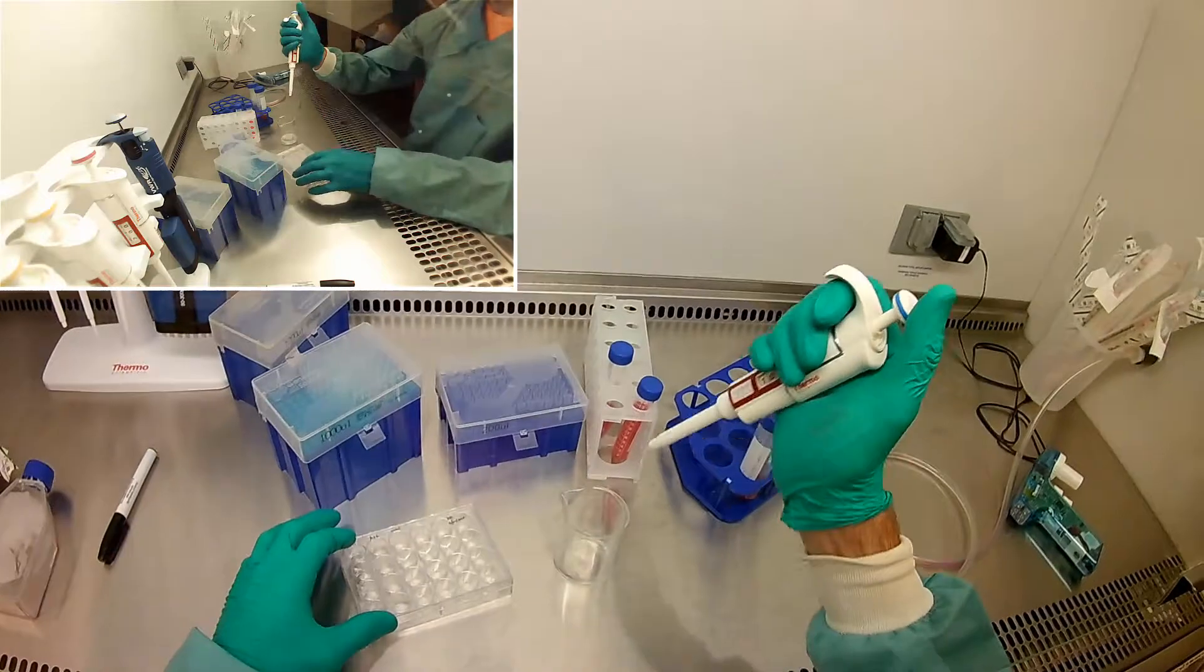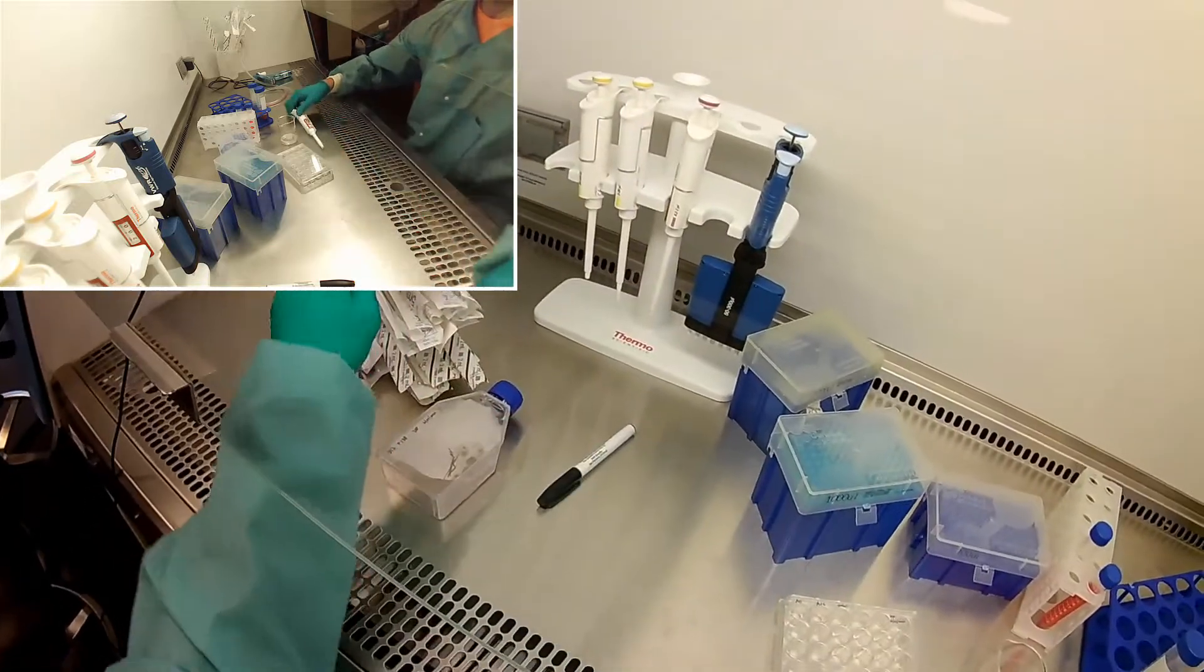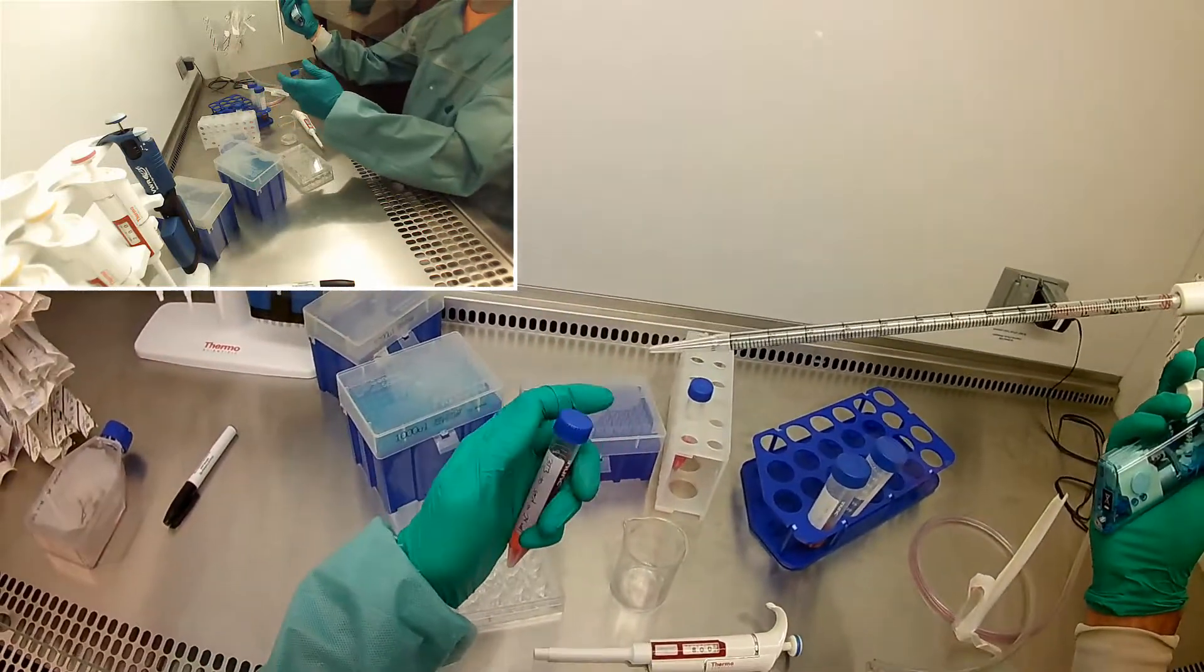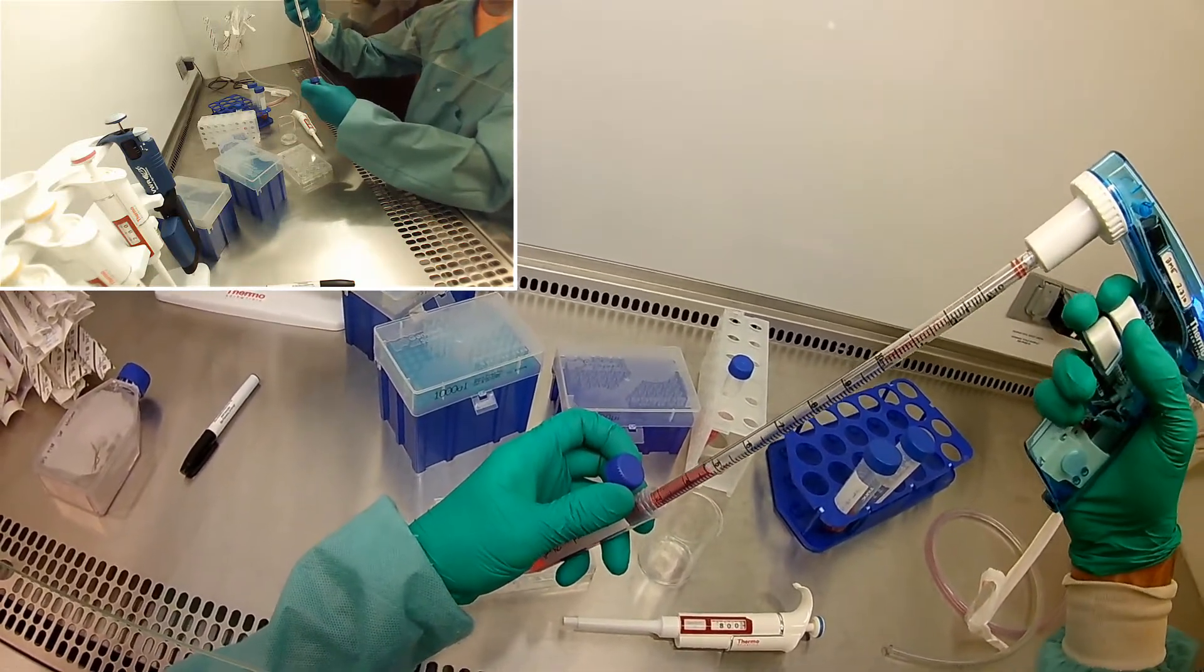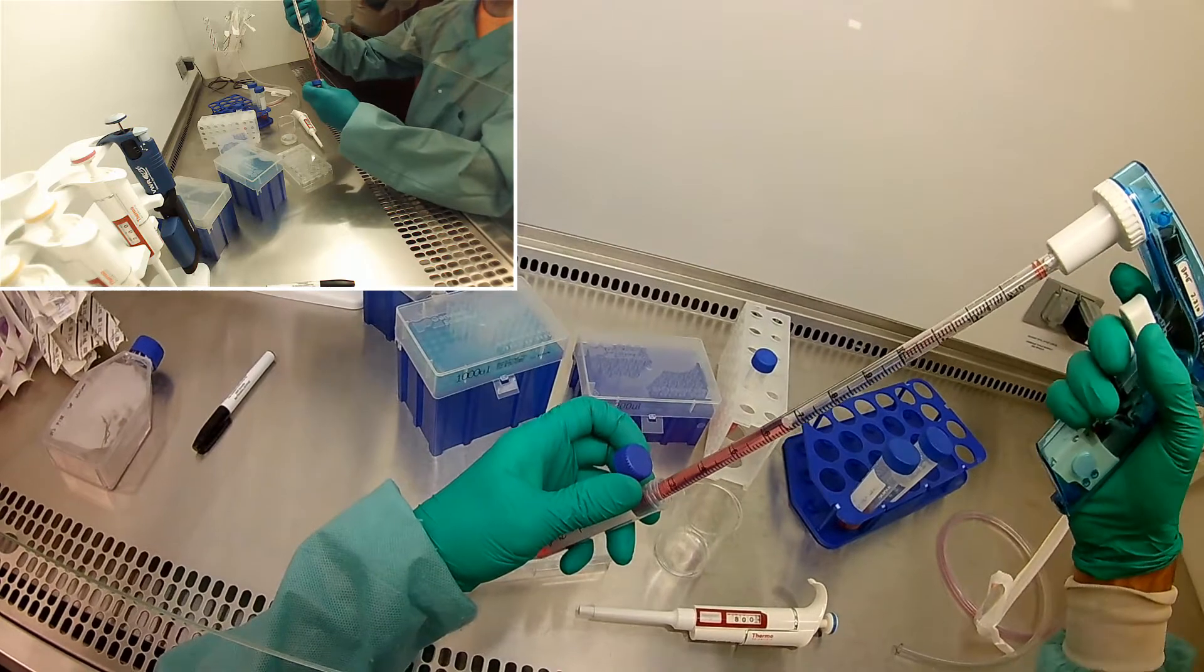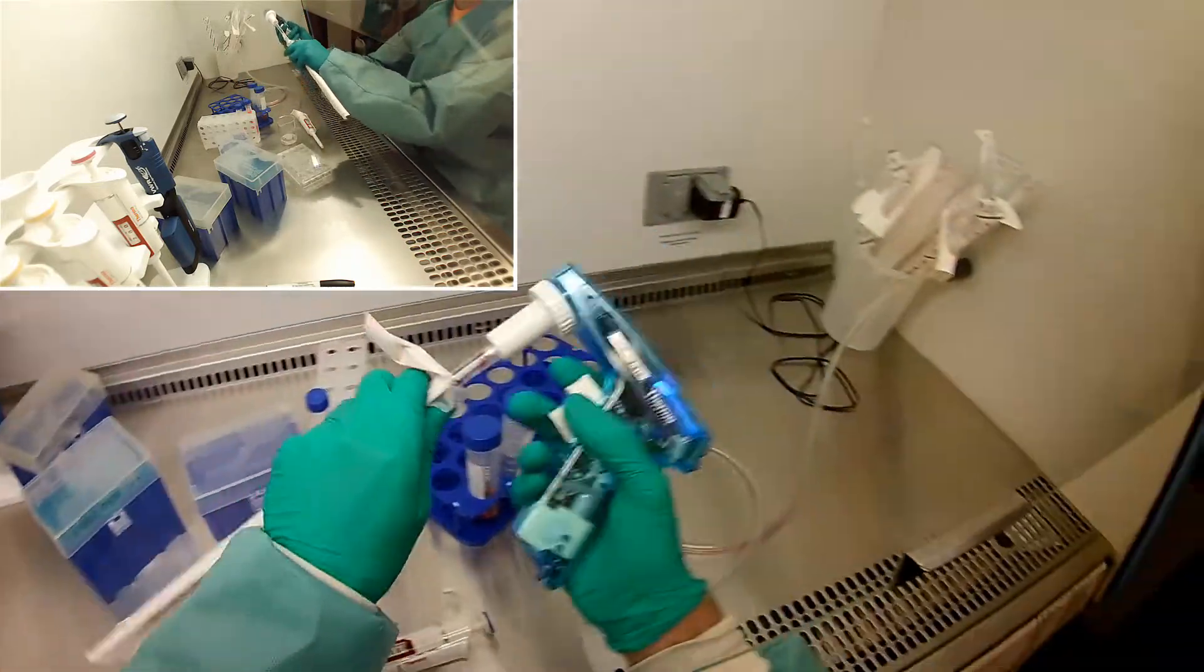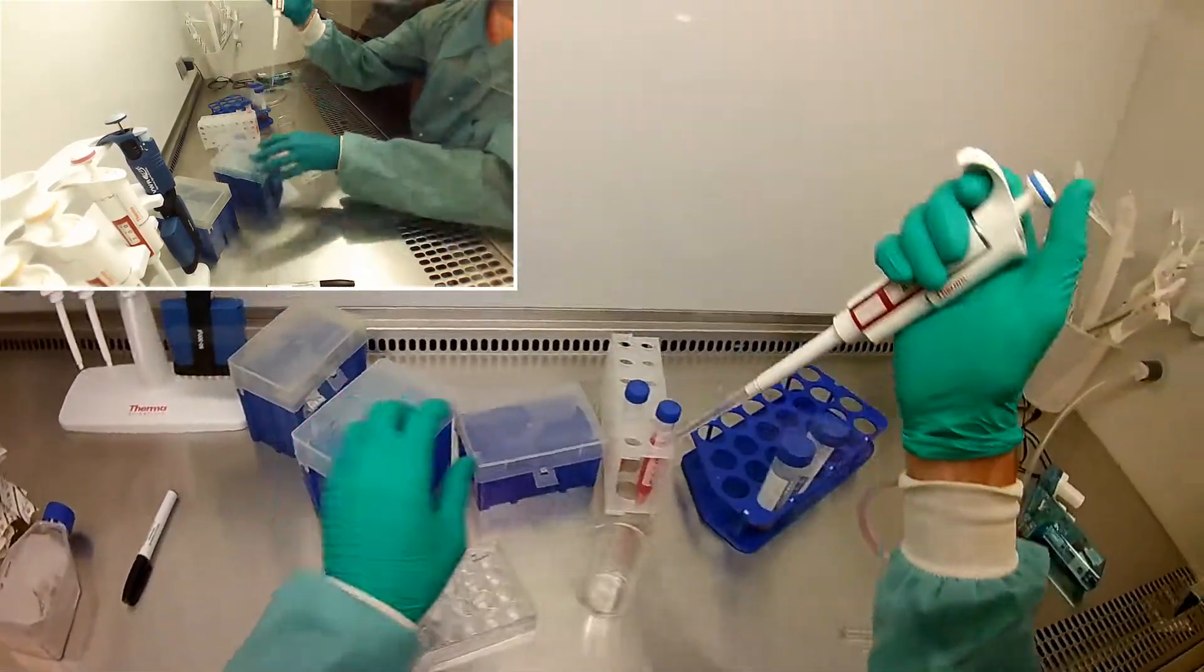Okay, so now we're going to want to put 800 mils into each of those. Before I do that, I'm going to take just a normal type of pet tip, and now I'm going to mix up my cells really well to make sure it's pretty homogenous. Okay, that's pretty good.